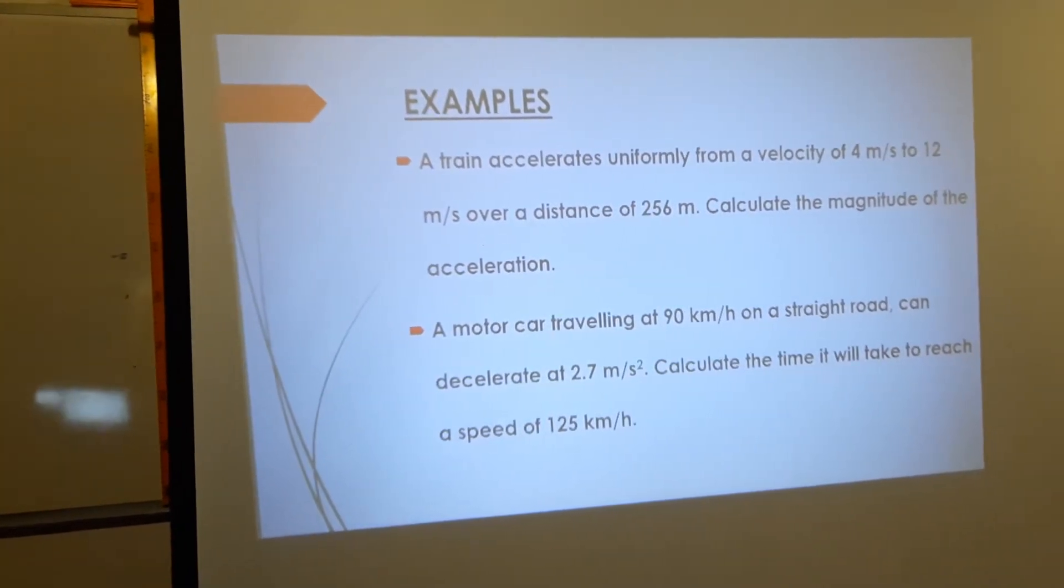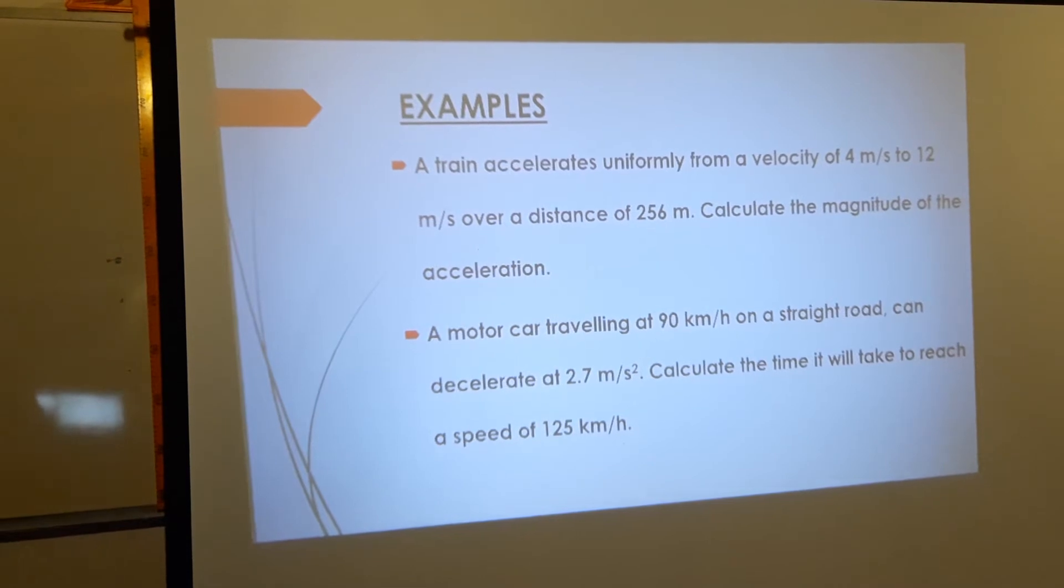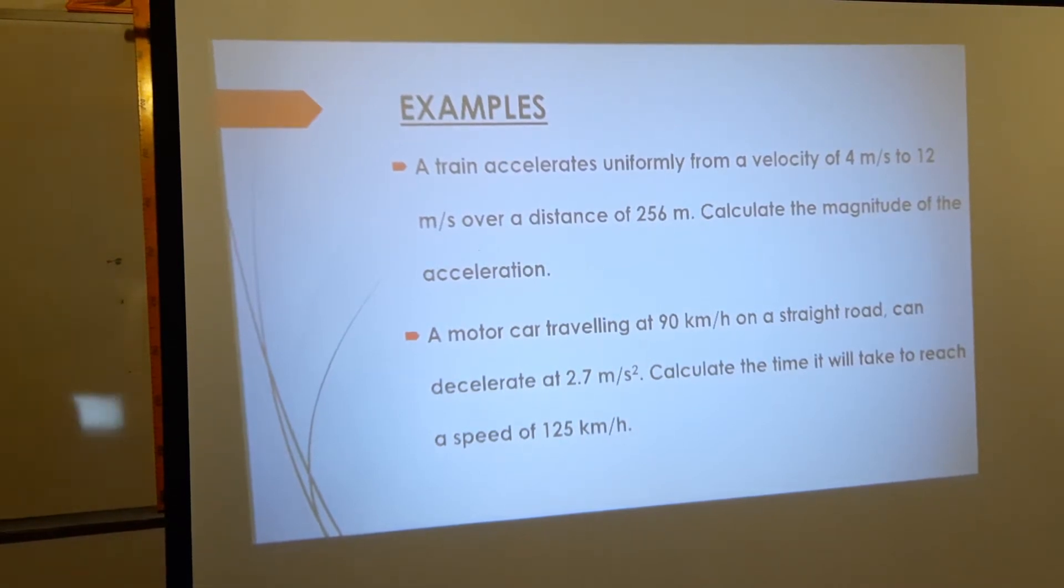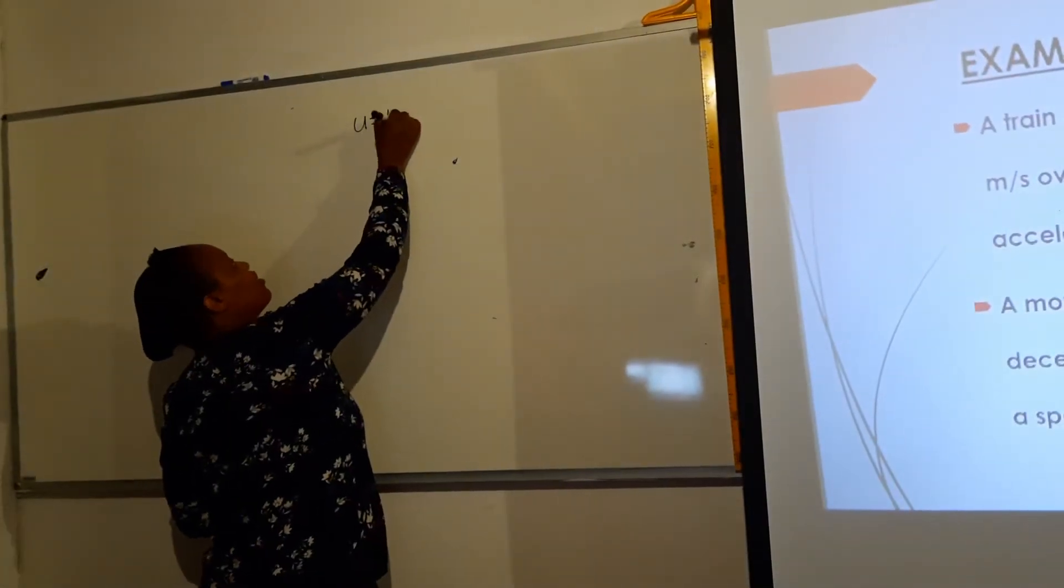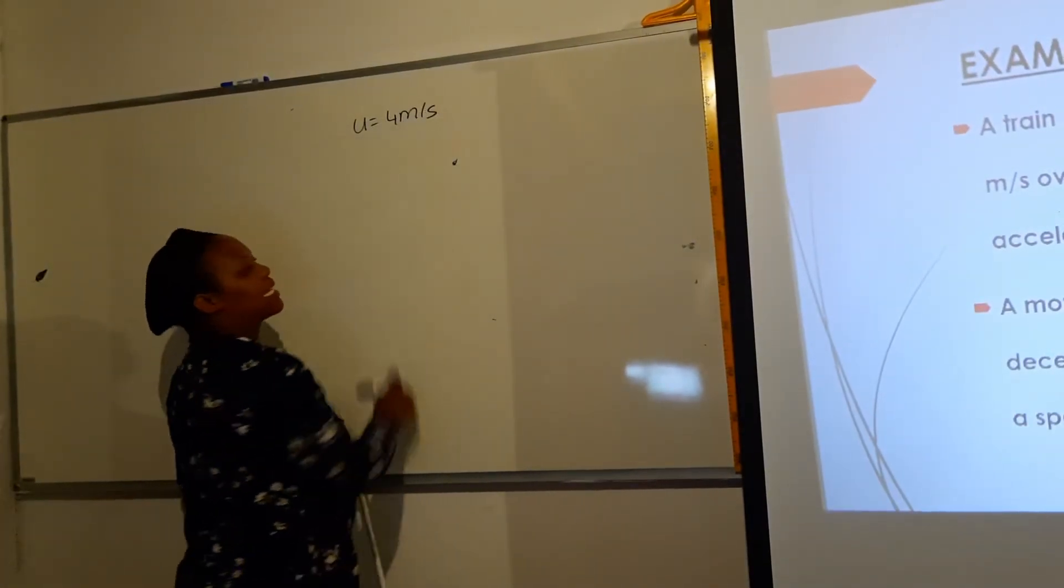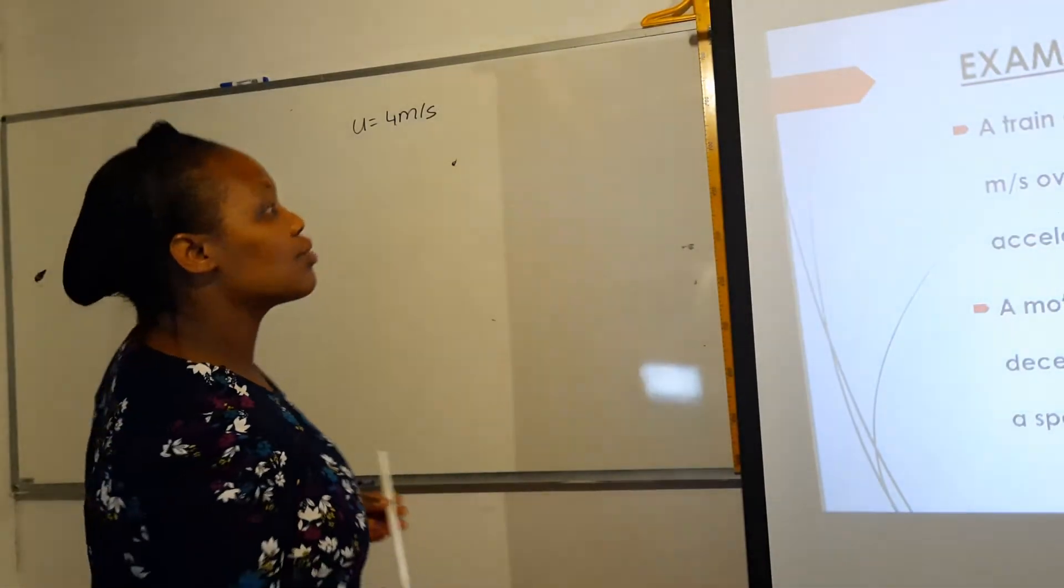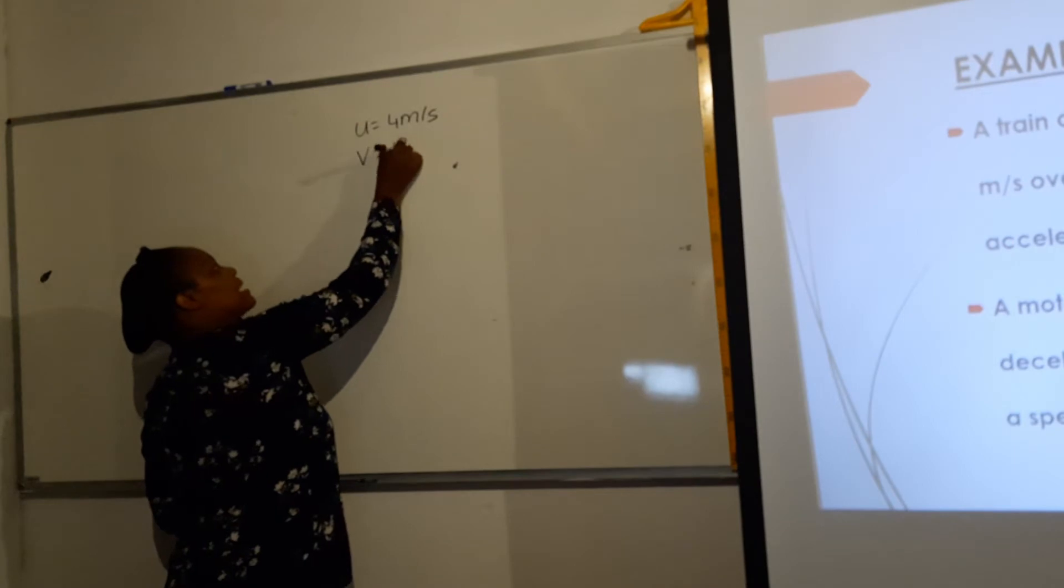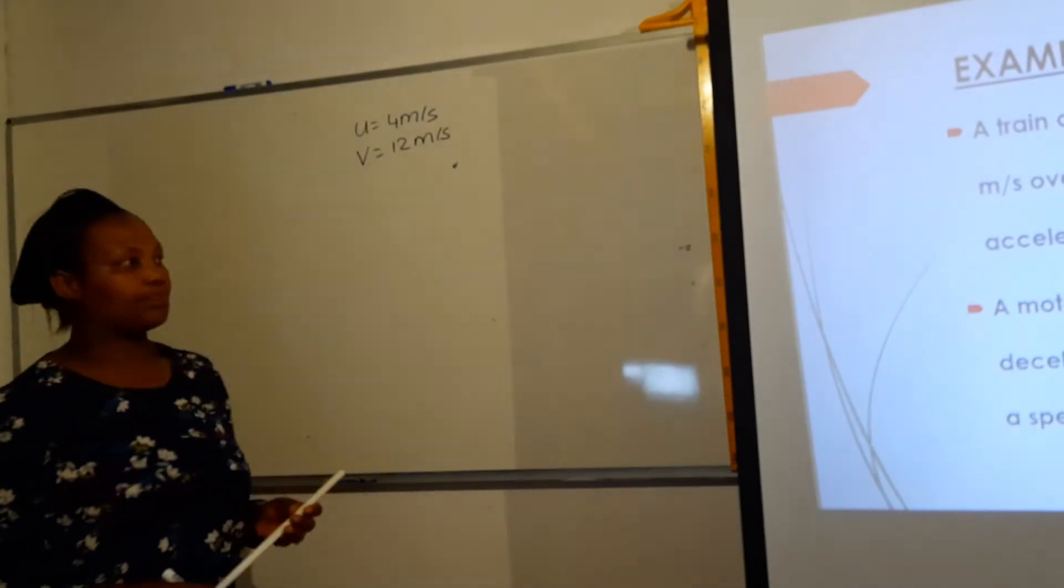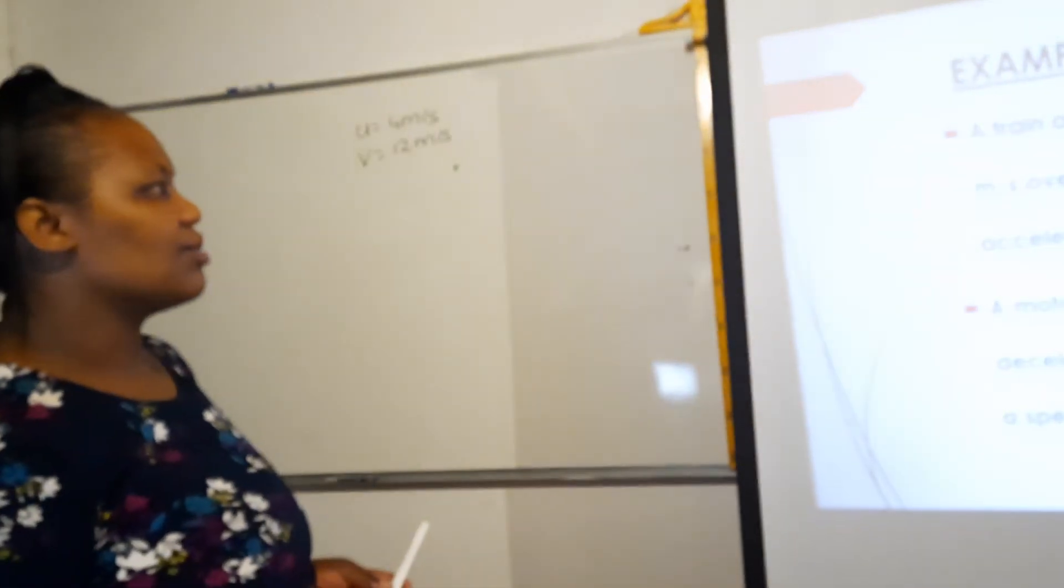So that first example says a train accelerates uniformly from a velocity of 4 meters per second. If they say 'from,' it means that's your initial velocity, velocity u, from initial velocity of 4 meters per second. Then they continue to say to 12 meters per second, so to 12 meters per second - that is the final velocity it gets to.